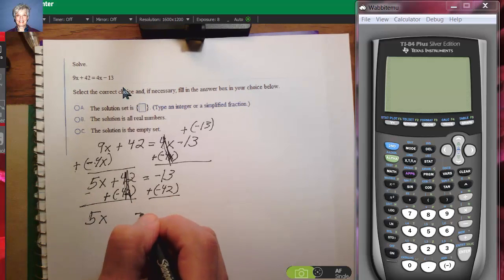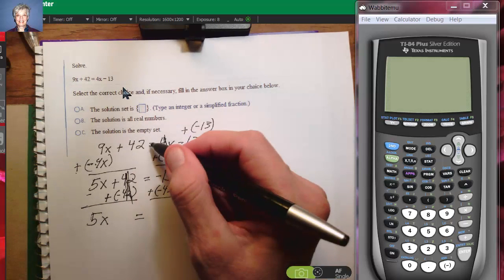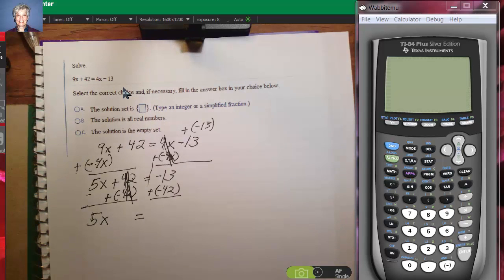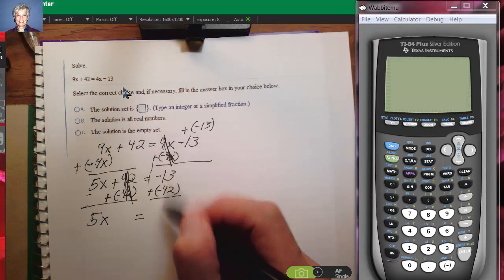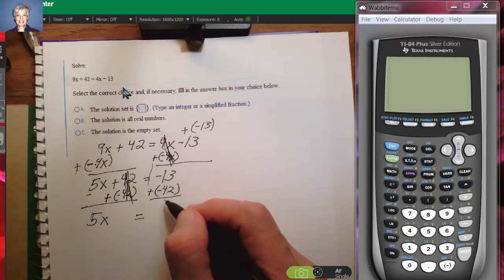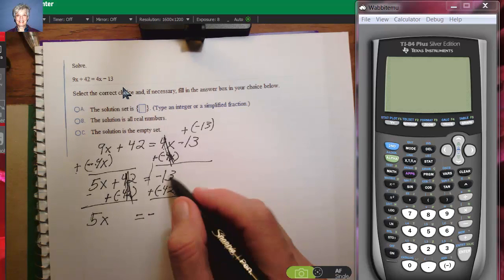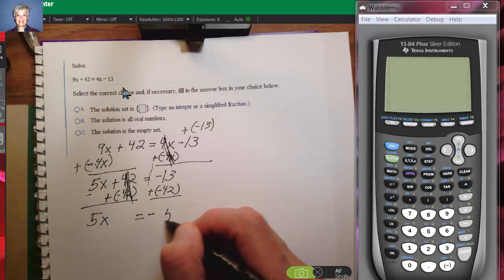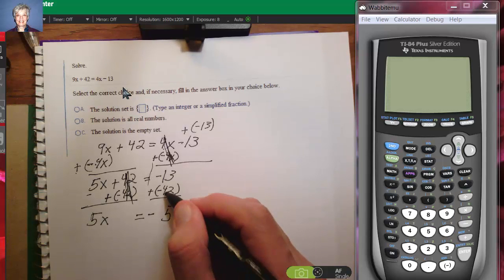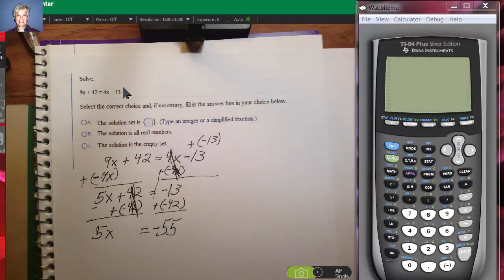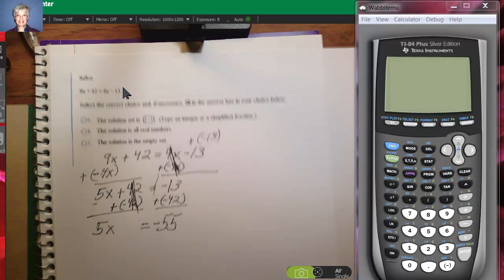Copy my equal sign down. Try to keep your equal signs in a vertical line. You're less likely to make mistakes if you do that. Now when you add two negative numbers, you add the number part and put a negative in front. So right now my equation is 5x equals negative 55.